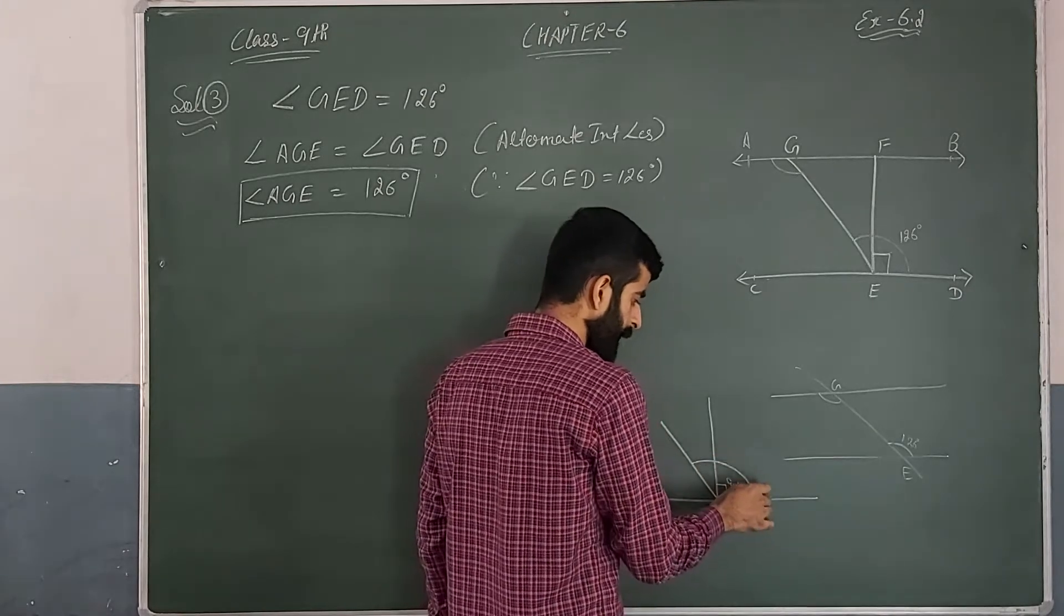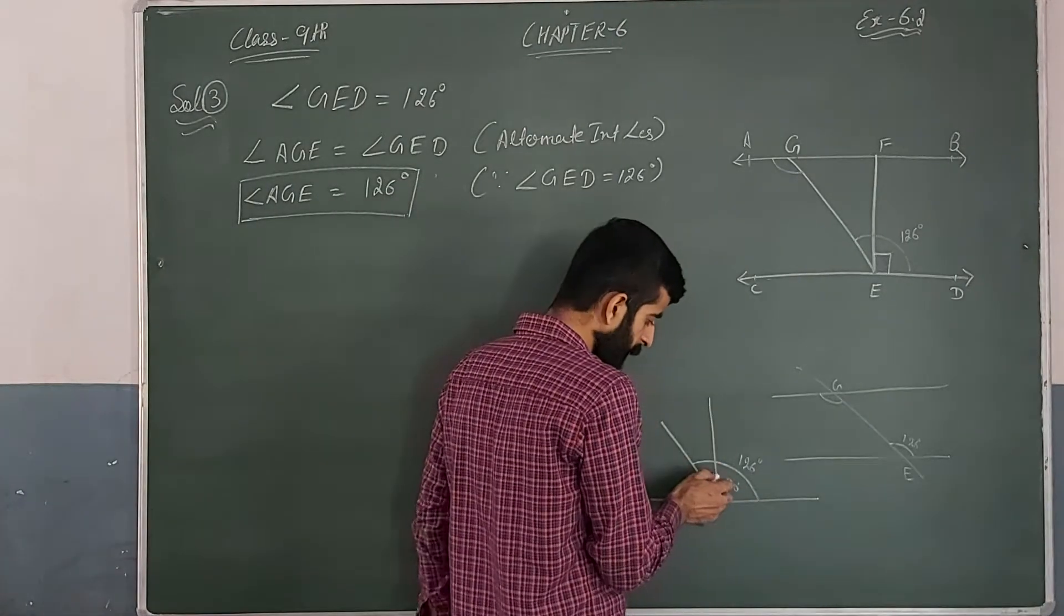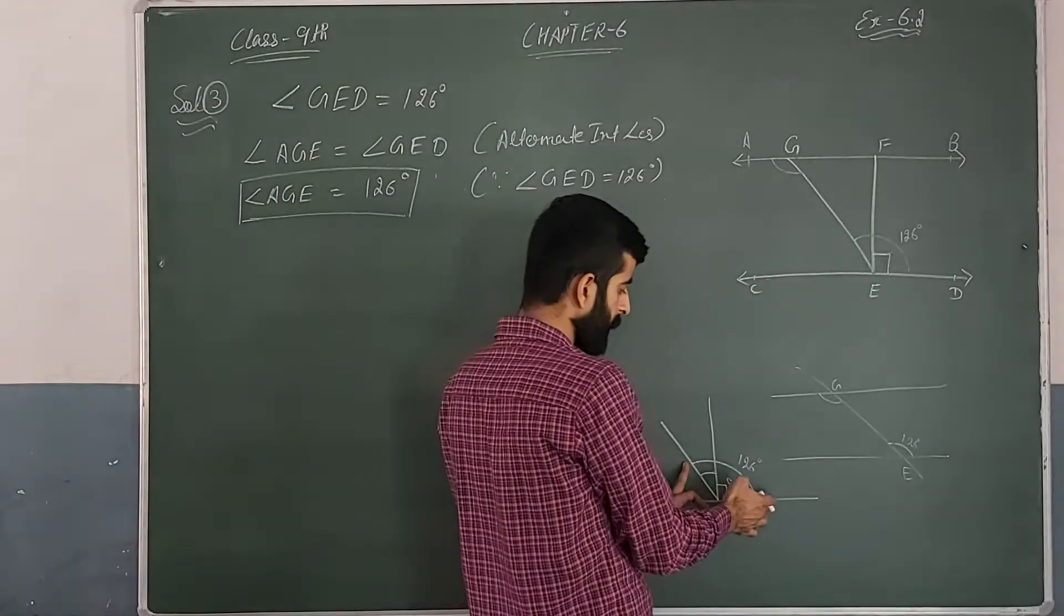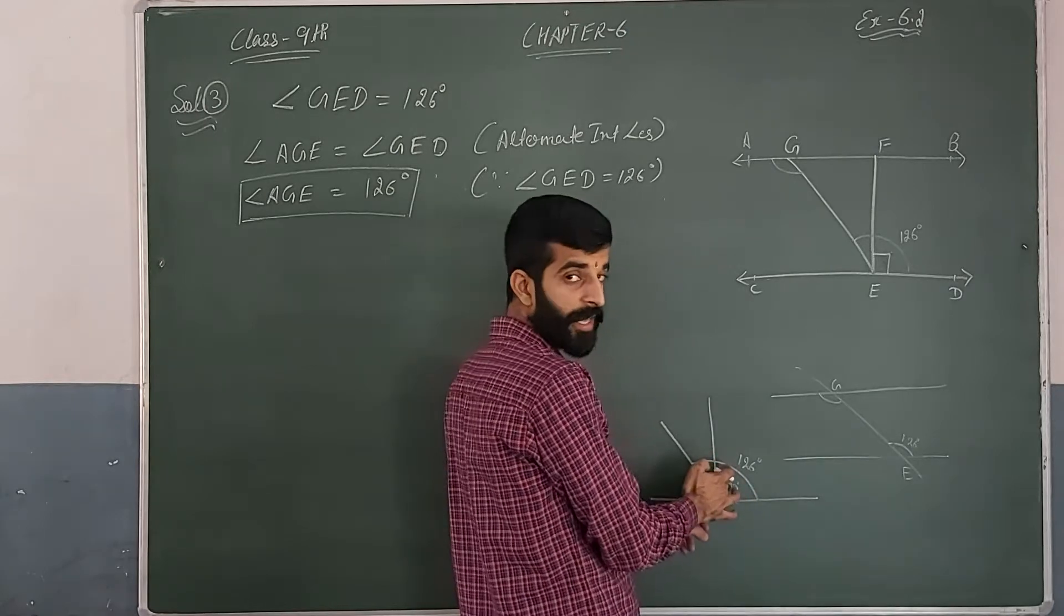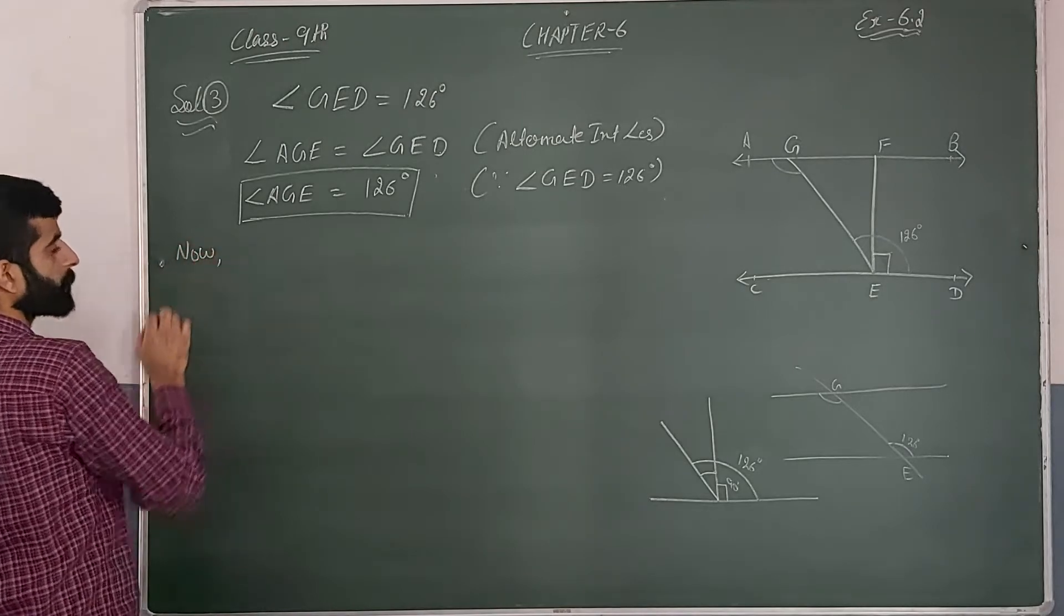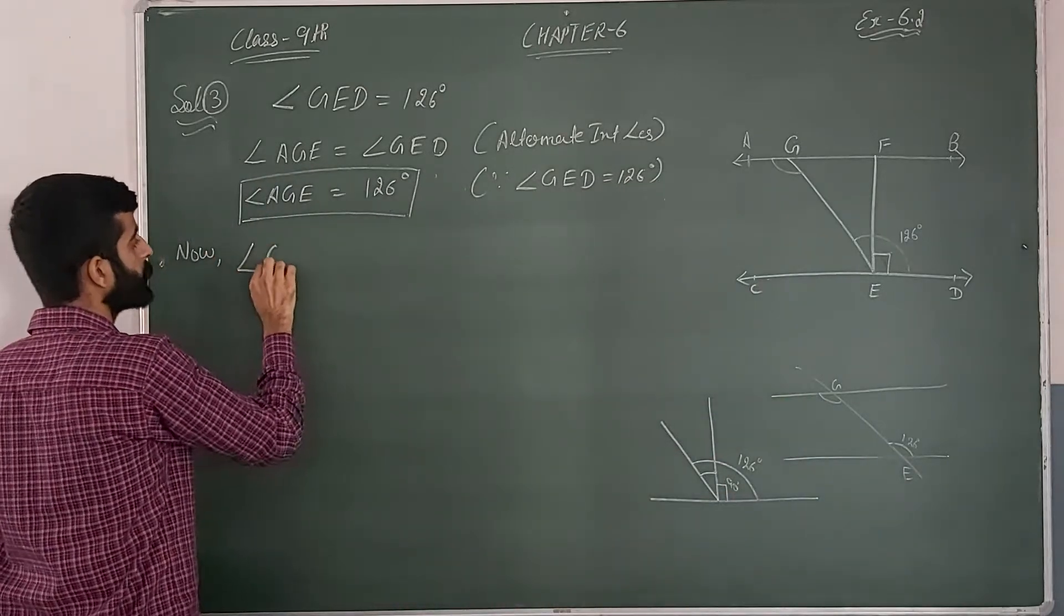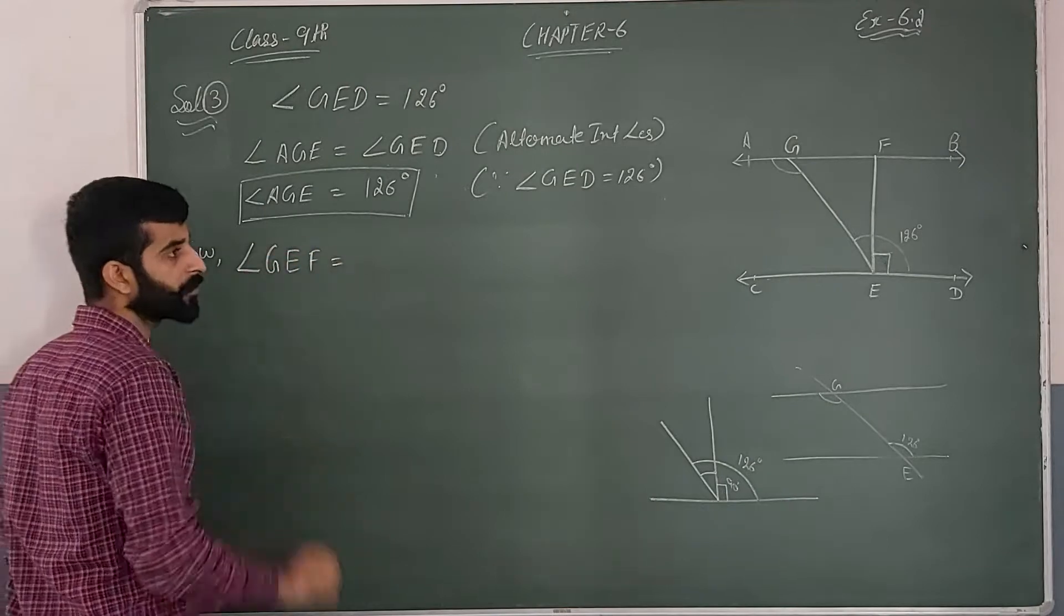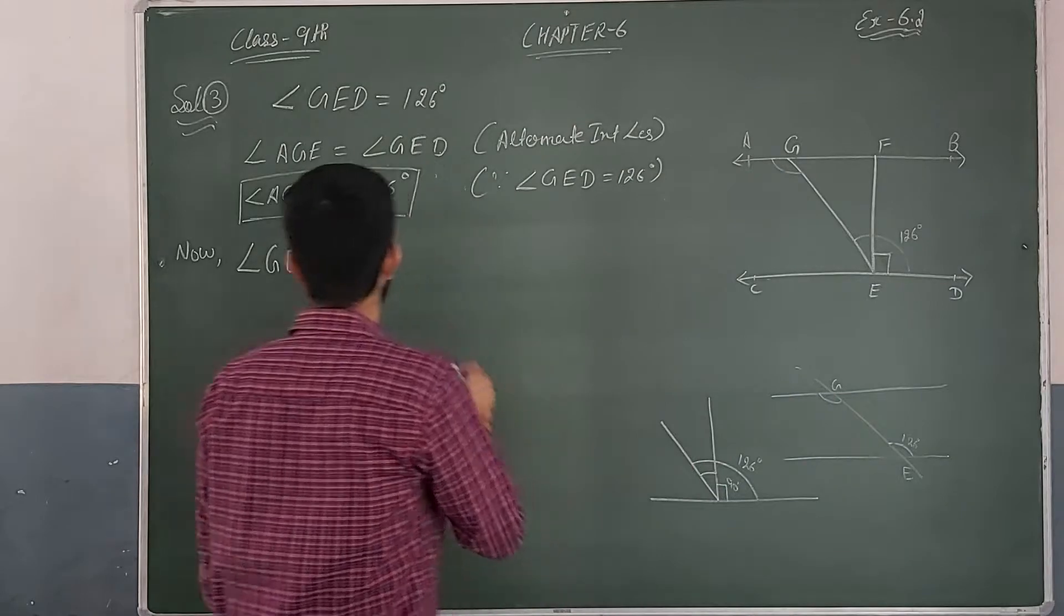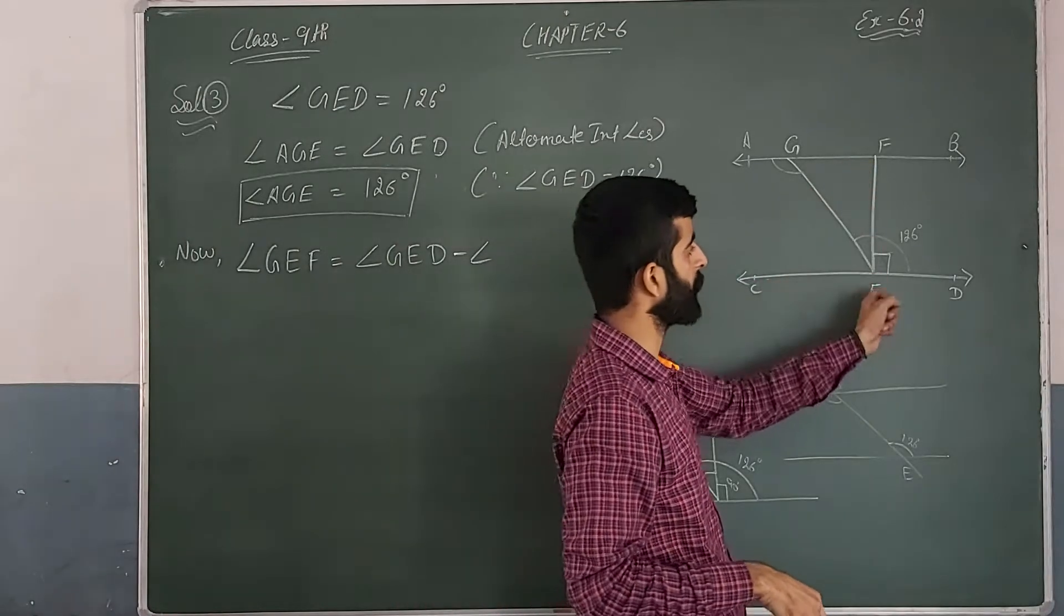Now this is a line, so 180 degrees minus the angle. Which angle is here? Angle GEF.